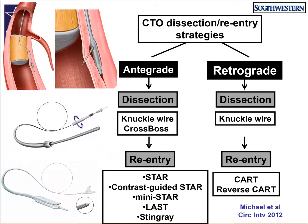Antegrade dissection reentry comprises two components. The first is dissection, which can occur either using a knuckle wire — usually a polymer-jacketed guidewire — or using the dedicated CrossBoss catheter, designed to advance in the subintimal space via a one-millimeter blunt atraumatic tip. Reentry can be achieved using guidewires, for example with the STAR technique or contrast STAR, or by using the dedicated Stingray balloon and guidewire, designed to facilitate reentry into the distal true lumen.